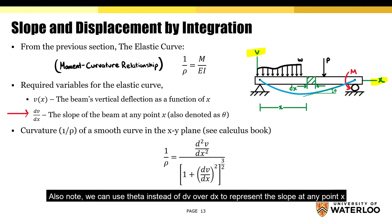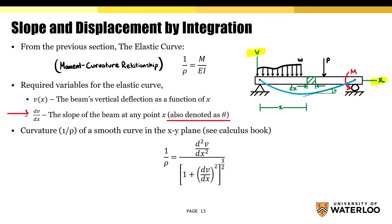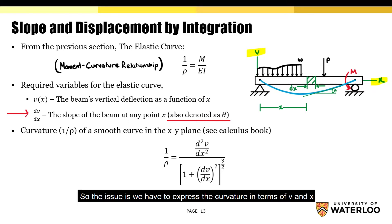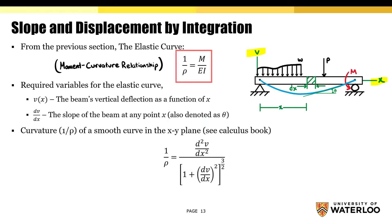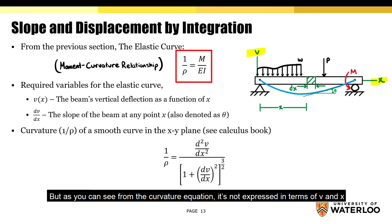Also note, we can use theta instead of dv over dx to represent the slope at any point x. So the issue is, we have to express the curvature in terms of v and x. But as you can see from the curvature equation, it's not expressed in terms of v and x.